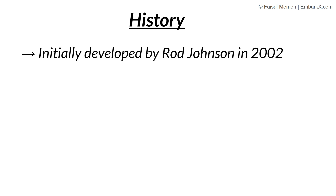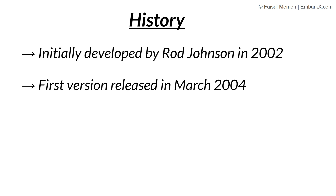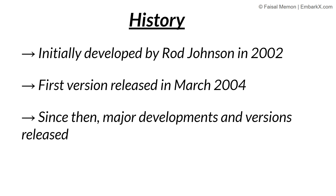A bit of history: Spring Framework came into existence in 2002, developed by Rod Johnson. Prior to this, everyone was building applications the traditional way in Java using Java EE, which was not a simplified approach to web development. Johnson's goal was to create a lightweight alternative to the Java EE platform. The first version of Spring was released in March 2004 with lots of core features, and since then it has undergone major developments with many versions released.